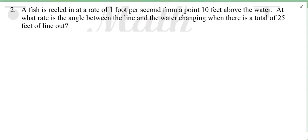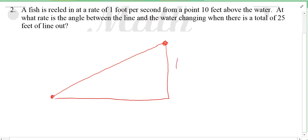Alright, so the fish happens to be right here where the water is, and it's connected by a fishing line up to here, which is 10 feet above the water. That's not changing. At what rate is the angle between the line and the water changing? That's right here.